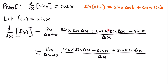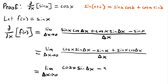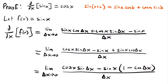All we did was rearrange the terms — it's the same expression, just written differently. The reason for rearranging is that now we can see a common factor of negative sine x in two of the terms, which we can factor out for simplification. Pulling out negative sine x, we get: cosine x times sine delta x, minus sine x times the quantity 1 minus cosine delta x, all divided by delta x.